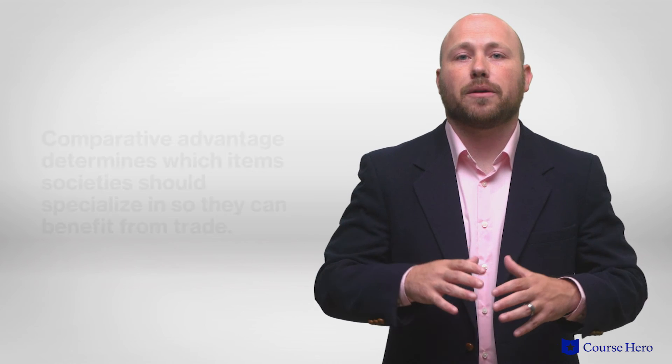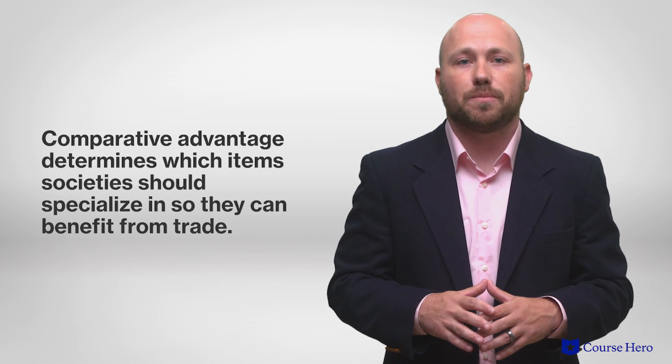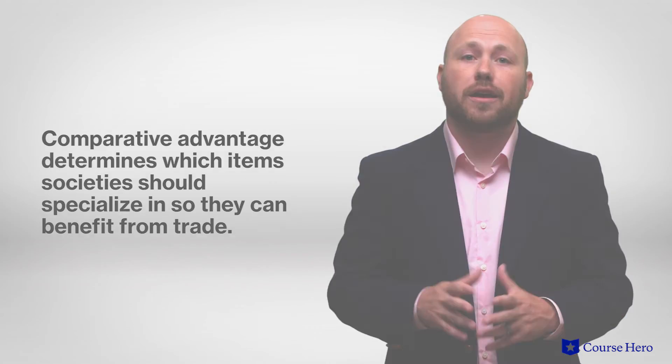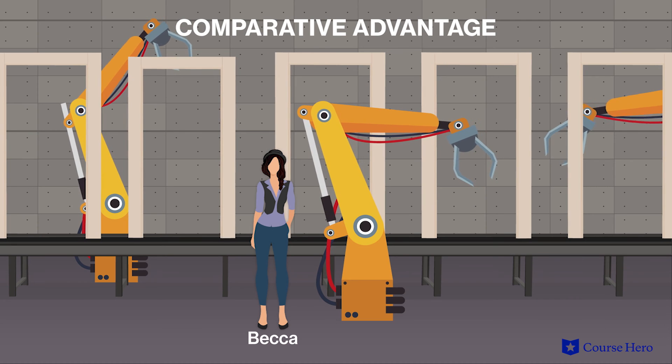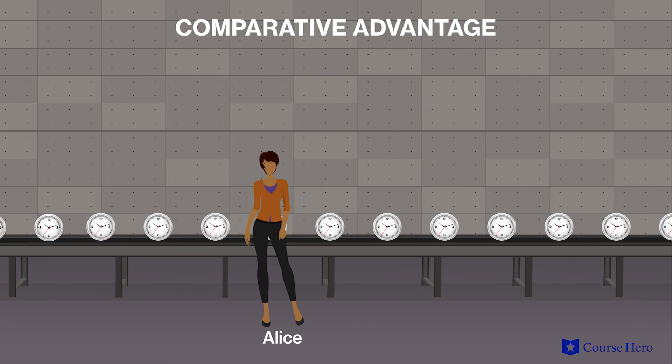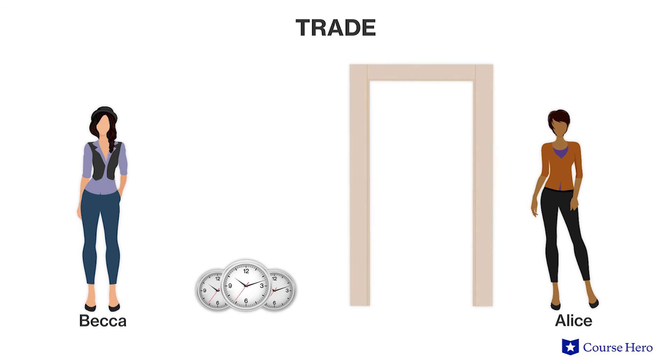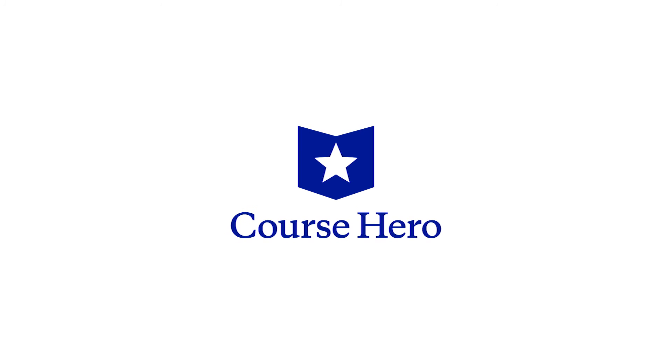Even though Becca has an absolute advantage in producing both items, she may still want to engage in trade with Alice. Just because a person or country could produce the most of each item, it doesn't mean they should try to produce everything. Economists use the idea of comparative advantage to determine which items society should specialize in so they can benefit from trade. In our example, Becca can focus on door frames and make them more efficiently, while allowing Alice to focus on producing clocks and then trading some of her door frames for some of Alice's clocks. Through specialization in one activity, Becca would gain the comparative advantage and benefit from trade.